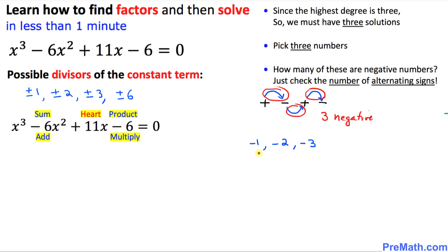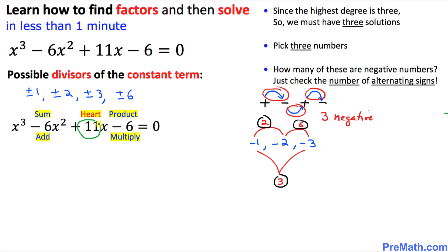We can check one more thing — I call it the heart. Negative 1 times negative 3 is positive 3. Negative 1 times negative 2 is positive 2. Negative 2 times negative 3 is positive 6. Adding these pairwise products: 2 plus 6 plus 3 gives us 11. And this shape of calculation looks like a heart shape — that's why I call it the heart.